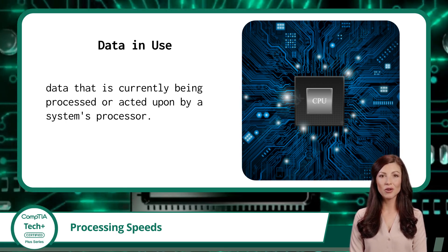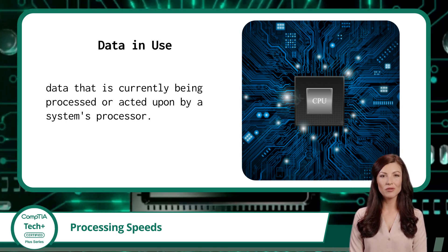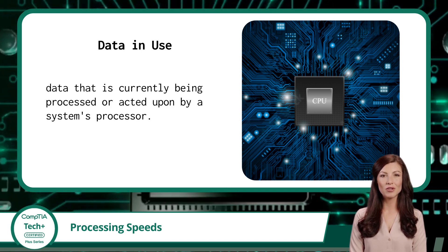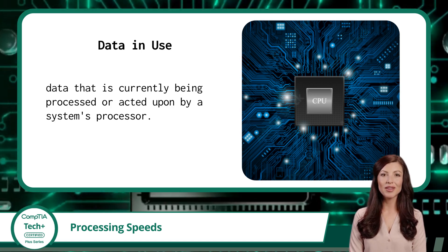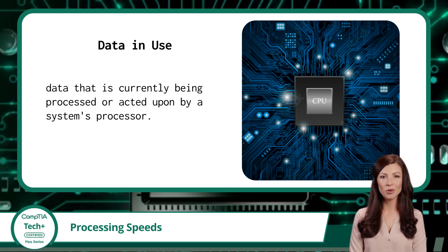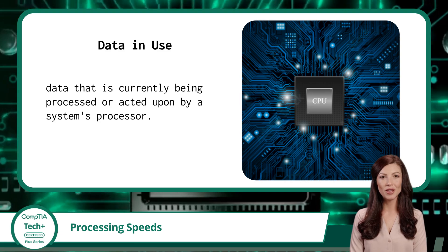Every modern computer has an internal clock, and that clock acts like a metronome, keeping everything running on beat. The clock speed controls how many cycles the processor can execute per second. And when we measure those cycles, we use a unit called hertz.